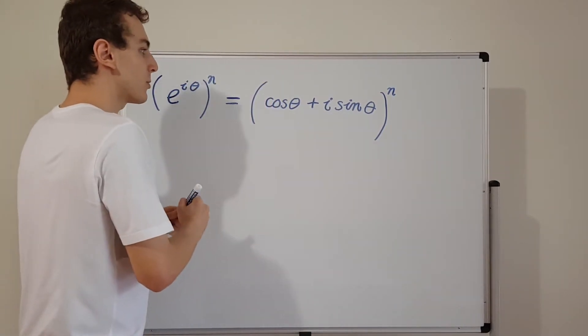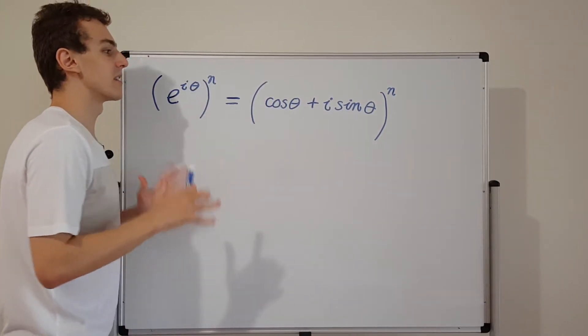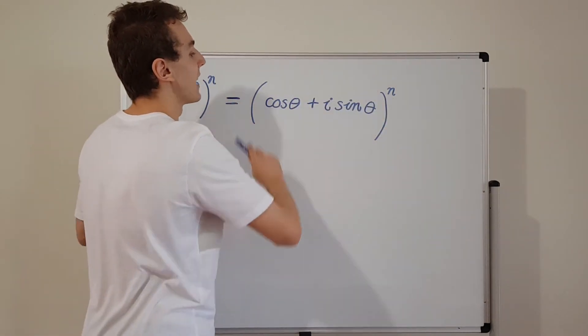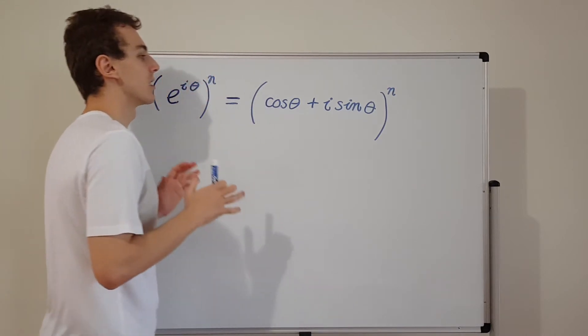And what I want to do is I want to show you de Moivre's theorem, and that actually gives us a very interesting relationship between this and another arrangement of trigonometric functions.